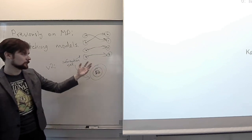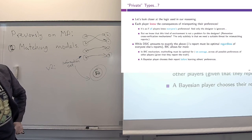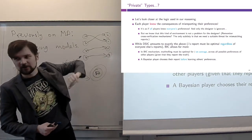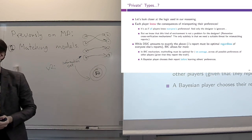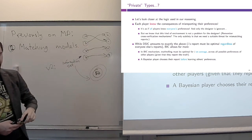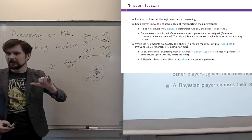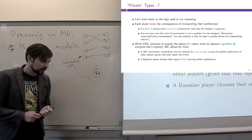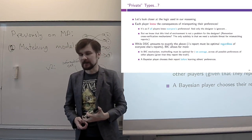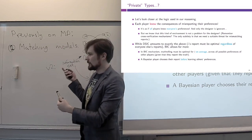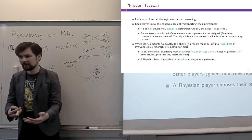Let us look at this model and ask: can we design a mechanism that would be incentive compatible for all players — dominant strategy incentive compatible, or at least Bayesian — and would implement a stable matching given all players' reports? That is why we are trying to learn player preferences: because we want to implement a stable matching.